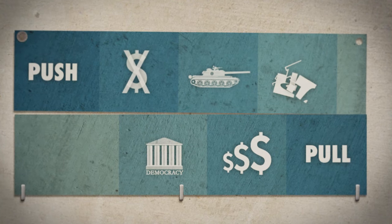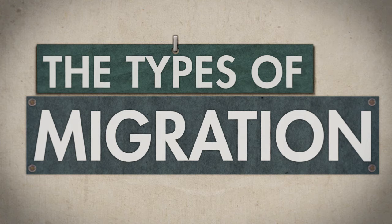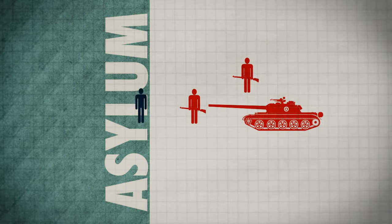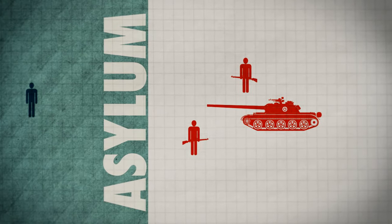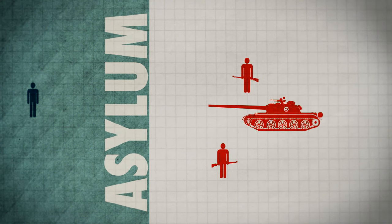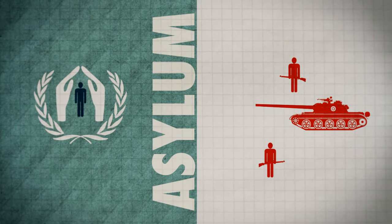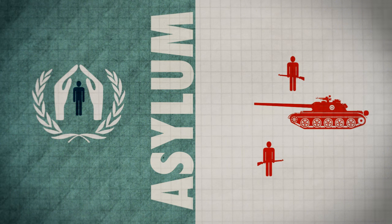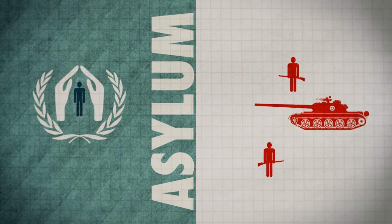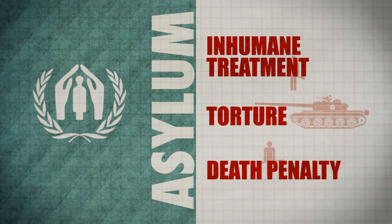Considering these reasons, one distinguishes between different forms of migration. Asylum seekers are fleeing war or persecution in their home country. The internationally accepted Geneva Convention states no person may be sent back to a country where they face inhumane treatment, torture, or the death penalty.